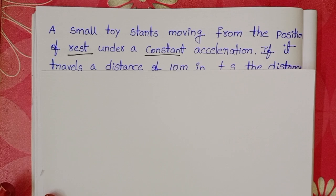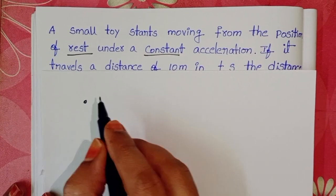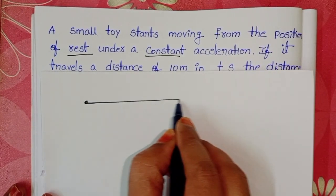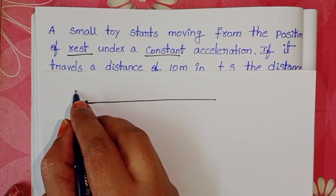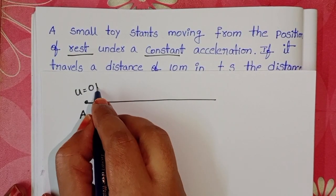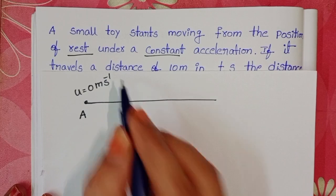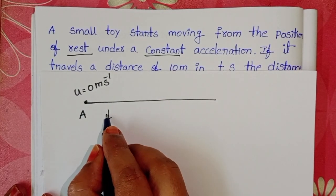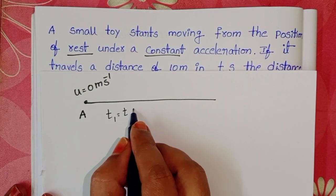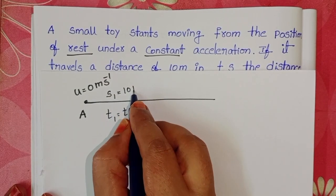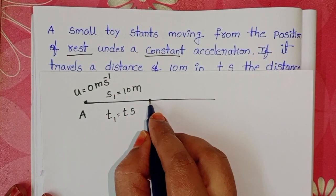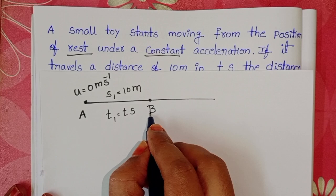In this question, initially a toy starts from the rest position. Let it be A. At A point, initial velocity of the toy is 0 meter per second. After time t-seconds, this toy covers a distance 10 meters with constant acceleration. Take this point is B.